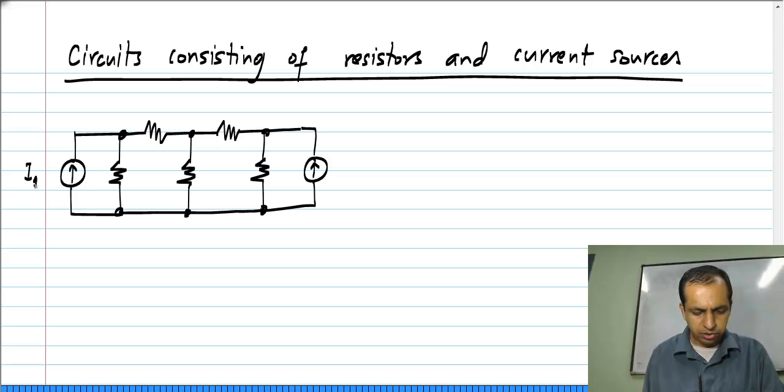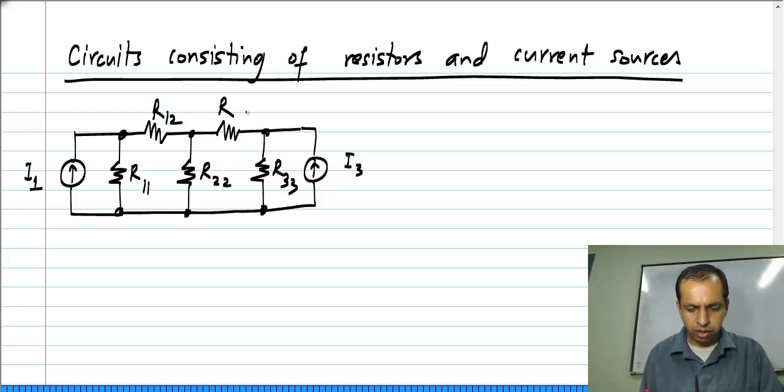And let me label these I1, I3, R1, R2, R3, R12 and R23. Now what do I write? When I write KCL equations, I look at every node. There are 4 nodes here 1, 2, 3 and 4. I choose any 3 of the 4 nodes and write KCL equations at all those nodes.